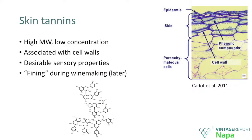Speaking of skin tannins, this is a picture of a cross-section of Cab Franc. Skin tannins are high molecular weight compounds. The good news is that they have particularly desirable sensory properties. Why so? A few reasons. They might be associated with polysaccharides, so they might be responsible for mouthfeel modification.